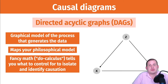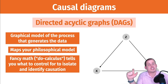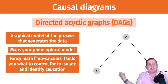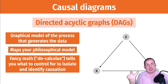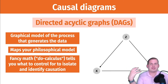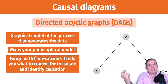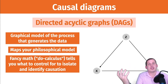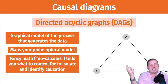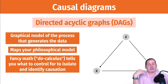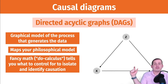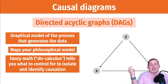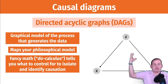The reason DAGs are important goes back to something from the very first session: the difference between correlation and causation. There is no mathematical test for causation — we have a correlation function in R and Excel that gives a number between -1 and 1, but we don't have a causation function that says something is 62% causal. Causation is instead a philosophical model of how you think the world works. DAGs are the graphical version of that philosophical model — they map your theory of how the world works into something graphical.